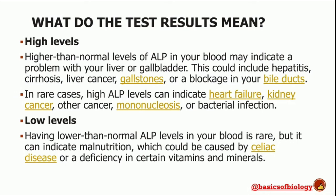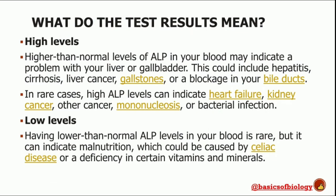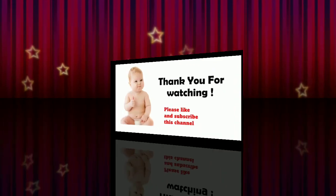Having a lower than normal alkaline phosphatase level in your blood is rare, but it can indicate malnutrition, which could be caused by celiac disease or a deficiency in certain vitamins and minerals. This was all about the alkaline phosphatase test. Your liver is a powerhouse organ performing a variety of tasks that are essential to maintaining good health, so please do take care of yourself.